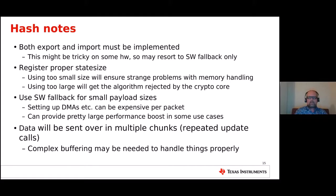Both export and import must be implemented, and they may be tricky on some hardware. If it's not possible to implement export/import from the hardware, you may need to resort to a software fallback only in cases where they are used. Also, register the proper state size for the transform — too small a size causes memory allocation problems, and too large a size will get the algorithm rejected by the crypto core; the size limit may be only a couple of kilobytes. An optimization trick: use a software fallback for small payload sizes, since setting up DMA and IRQs can be expensive per packet. Also note that data is sent in multiple chunks, so you get repeated update calls and may need complex buffering.